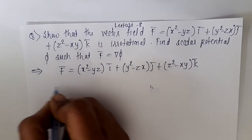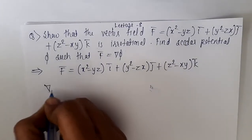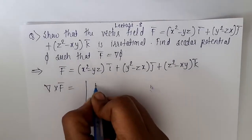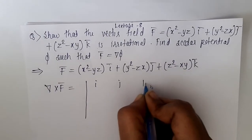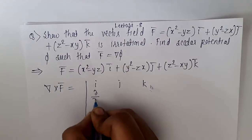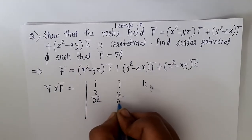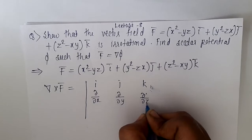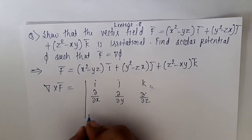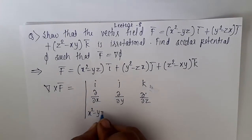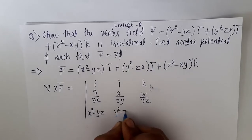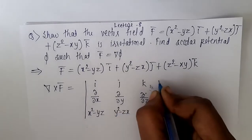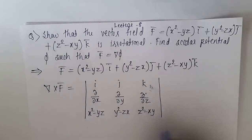Now, del cross f is equal to the determinant with i, j, k in the first row; del/dx, del/dy, del/dz in the second row; and (x²-yz), (y²-zx), (z²-xy) in the third row.